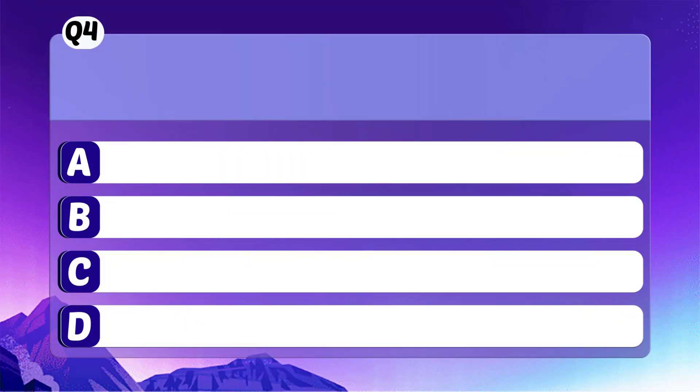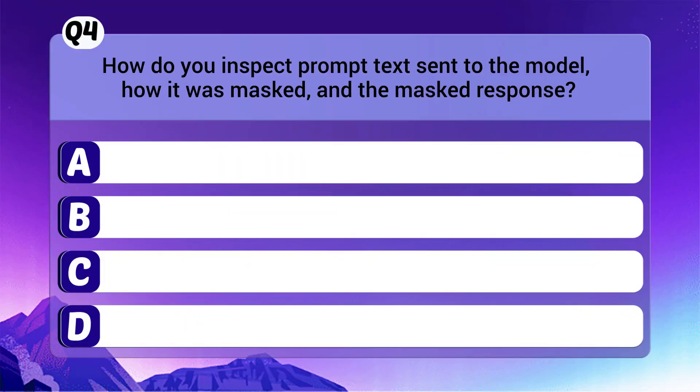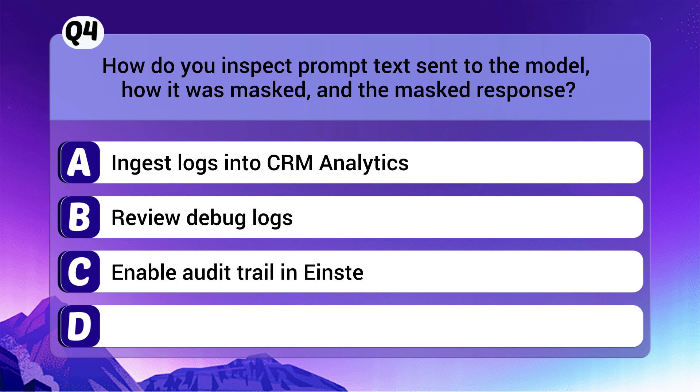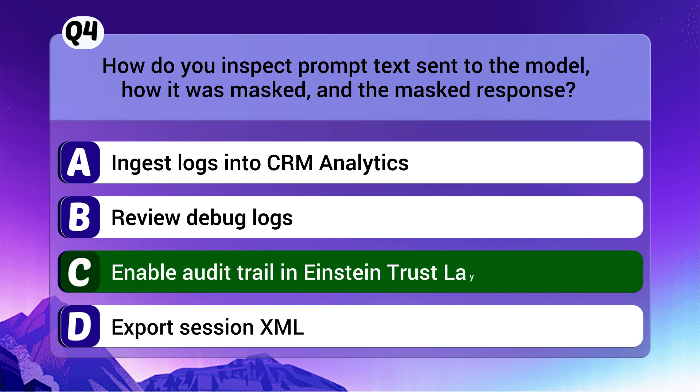Question 4: How do you inspect prompt text sent to the model, how it was masked, and the masked response? The correct answer is C: Enable audit trail in Einstein Trust Layer.